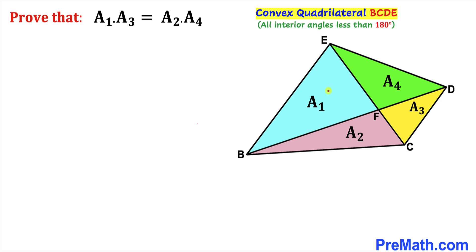The area of this blue triangle is A sub 1, the area of this pink triangle is A sub 2, and the area of this yellow one is A sub 3.